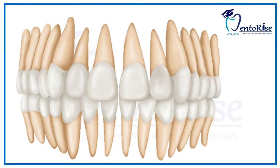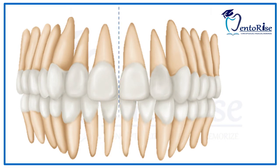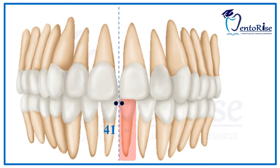The permanent mandibular central incisors are 2 in number, centered in the mandible, one on either side of the median line with mesial surface of one tooth in contact with the mesial surface of the another tooth. According to the FDI tooth notation system, the right permanent mandibular central incisor is numbered as 41 and the left permanent mandibular central incisor is numbered as 31.